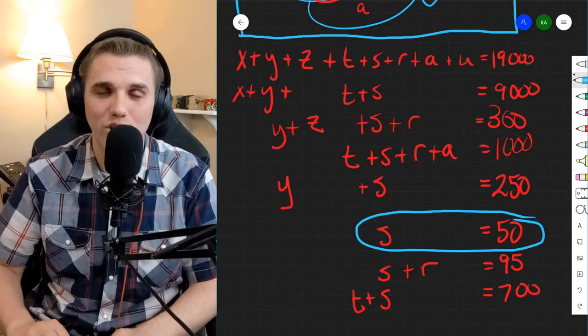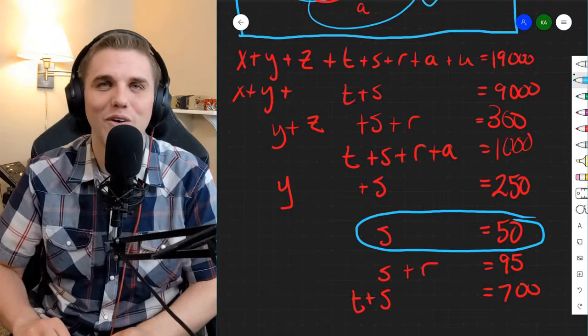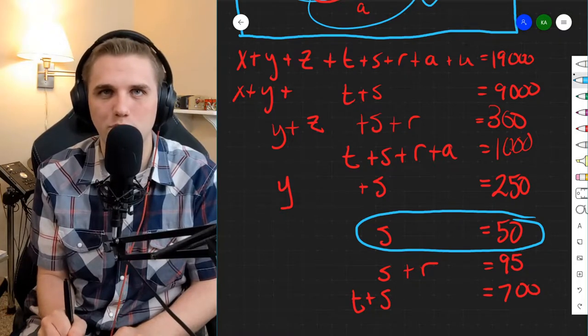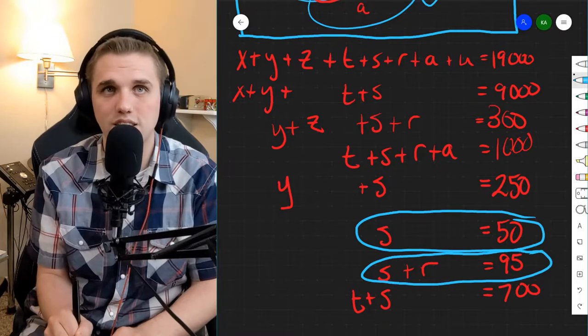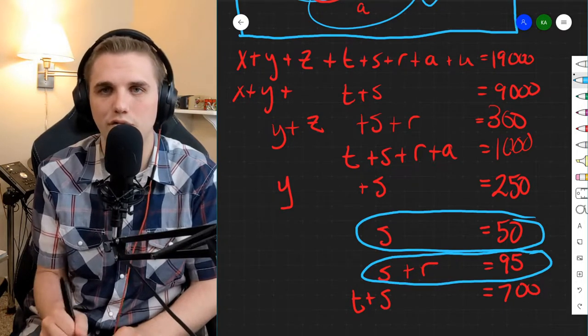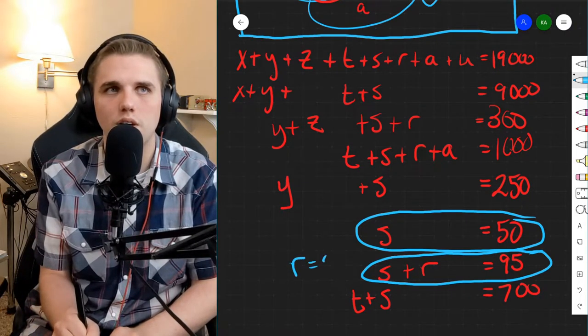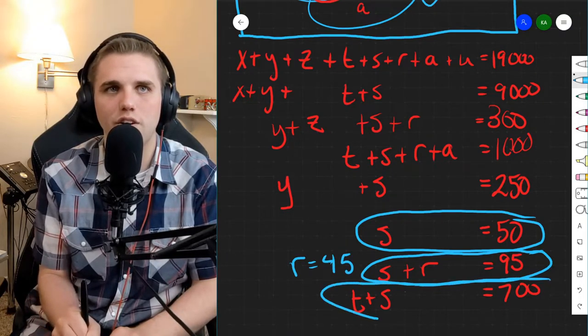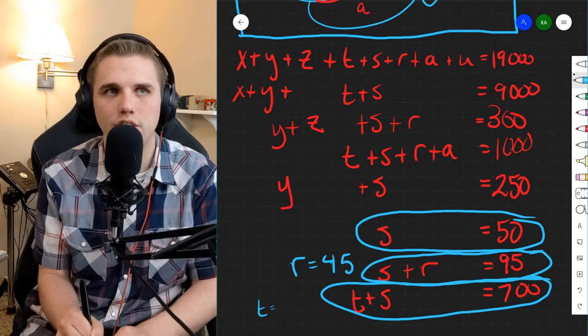Otherwise, this is like a Sudoku puzzle. So now we know that S is 50, which means that I can figure out what S plus R is. Since S is 50, that means R has to be 45 because then 50 plus 45 is 95. So R equals 45. Now, if S equals 50, I could figure out T as well here. S is 50 means T is 650.